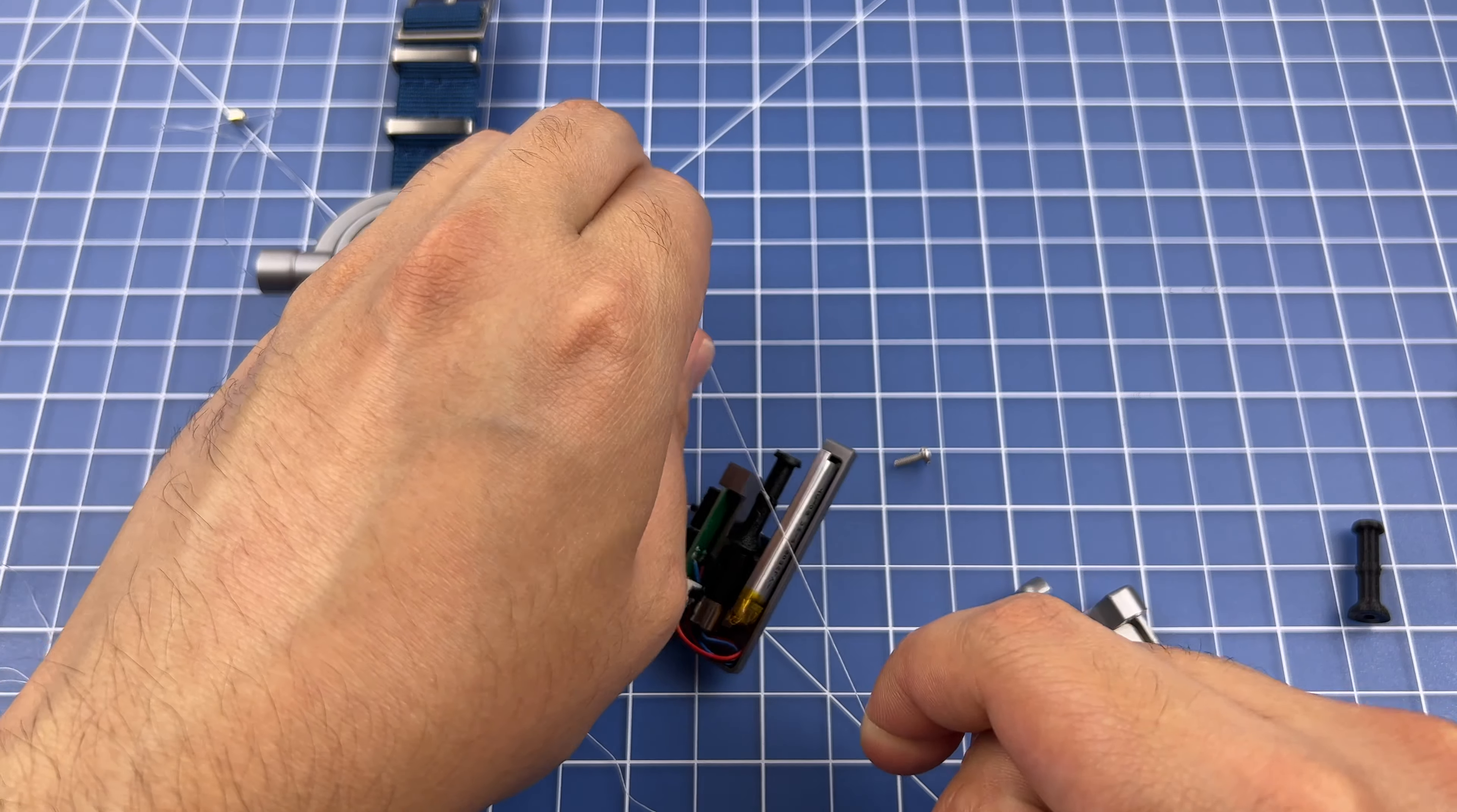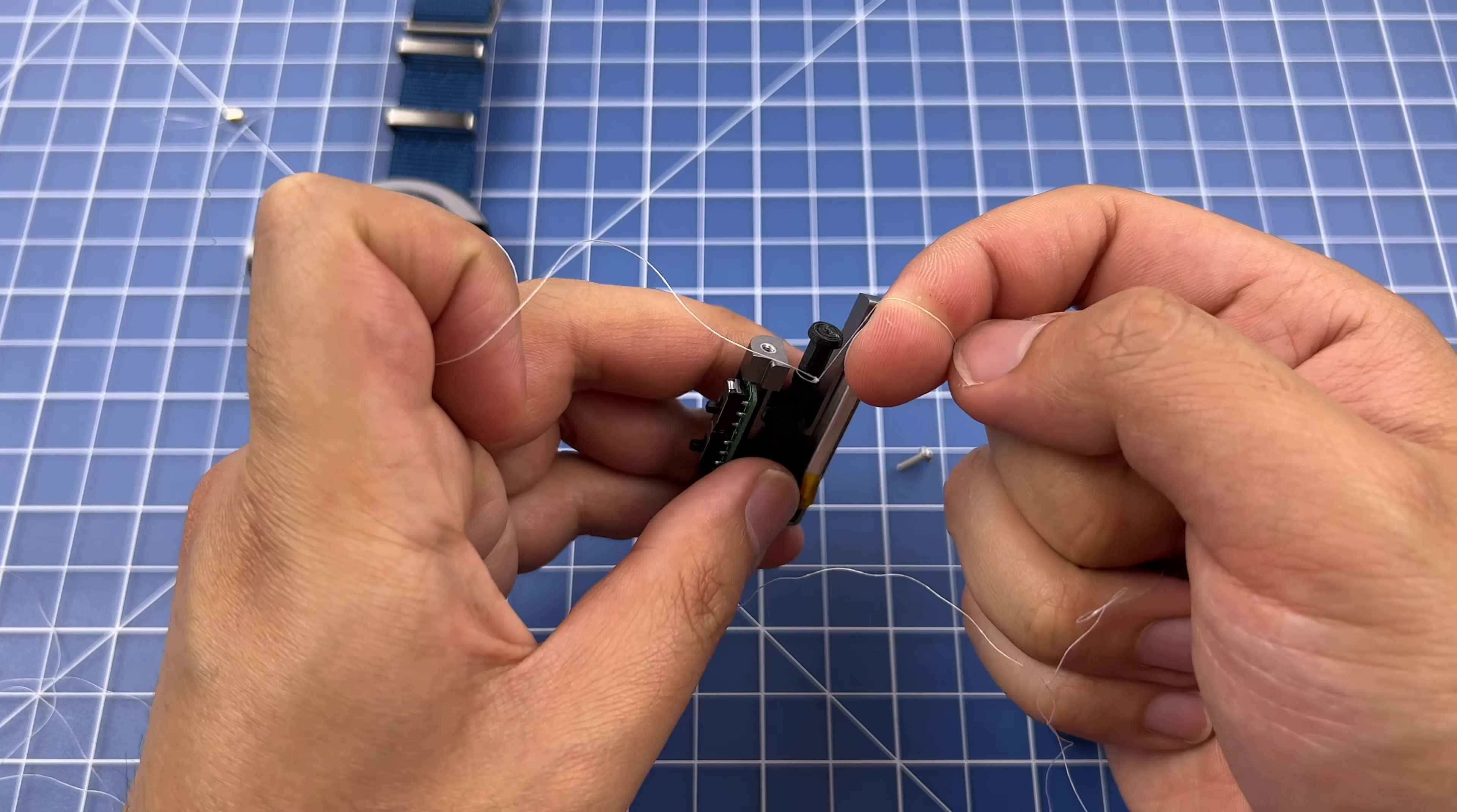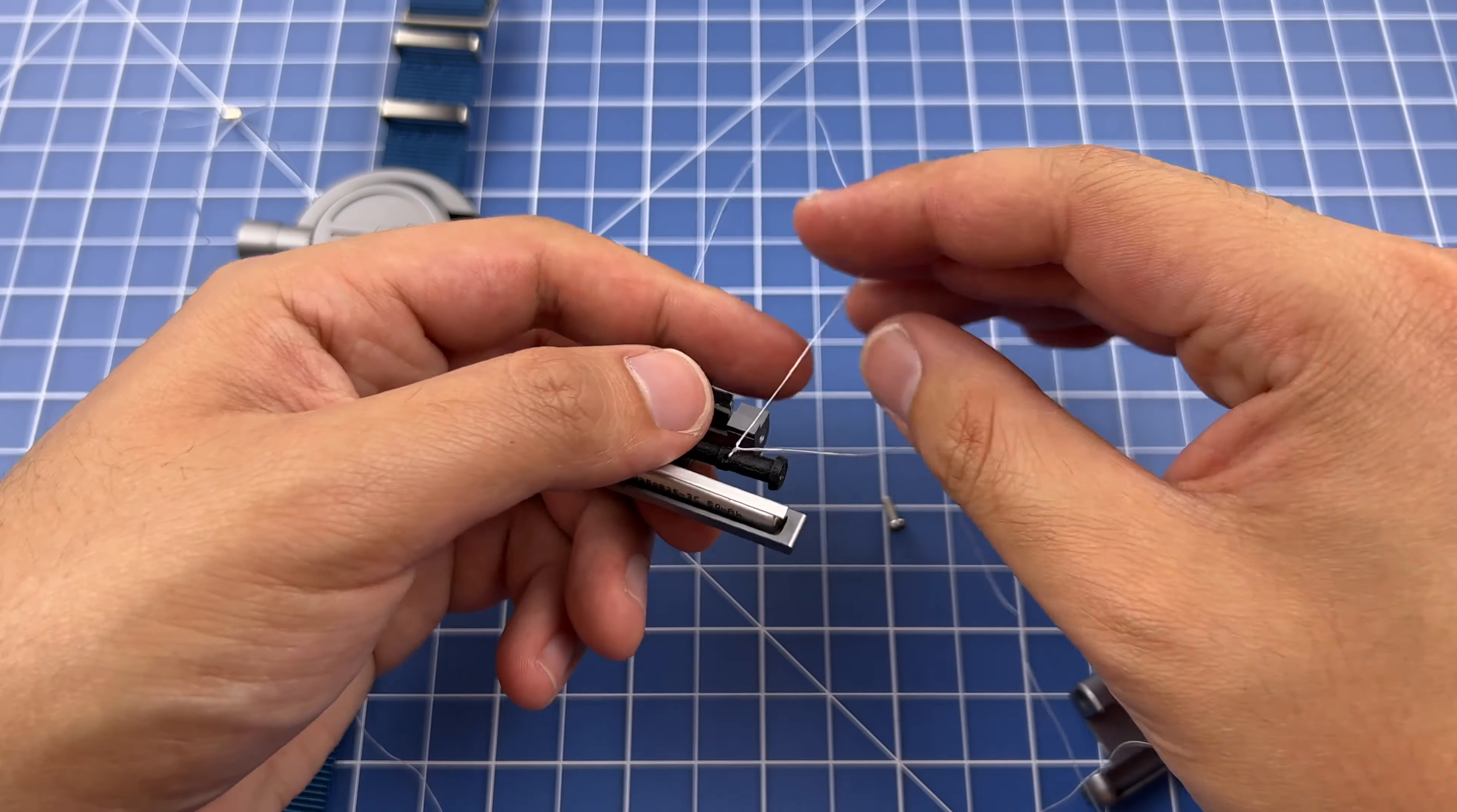That's knot number one. Knot number two. Knot number three. And finally knot number four. With all these knots, you want to make sure the knots are as tight to the spool as possible. If not, this may interfere with the thread while spooling out. Pull it as tight as possible so it sits on the spool tightly and give it a couple test tugs to make sure everything is snug. Once you're sure it's snug, you can cut off the excess thread.